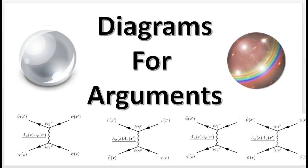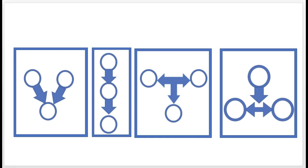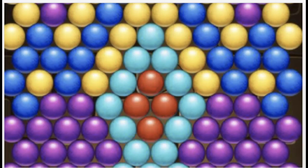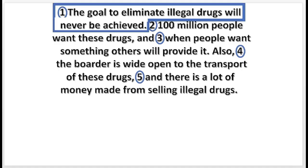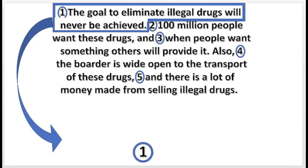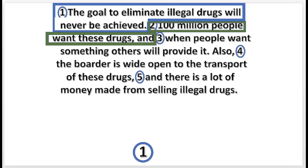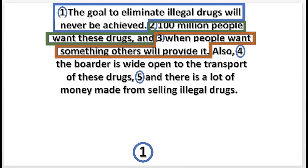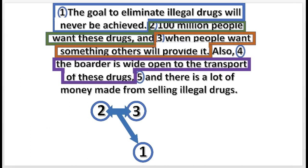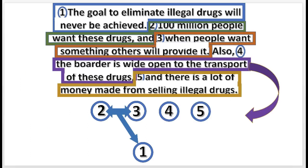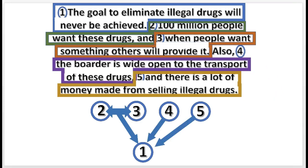Ladies and gentlemen, welcome back to Logic. In the last video, we discussed diagrams for arguments. We learned the four basic patterns, but in this video we'll learn more complex patterns. Here's an example. As we examine the argument, we see that statement 1 is the conclusion. As we draw the diagram, we see that statements 2 and 3 support the conclusion conjointly. Statements 4 and 5 support the conclusion independently.